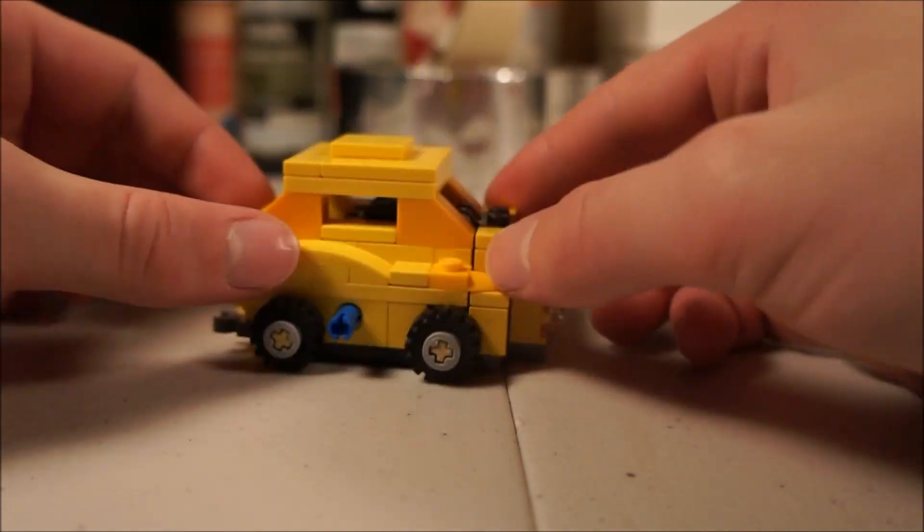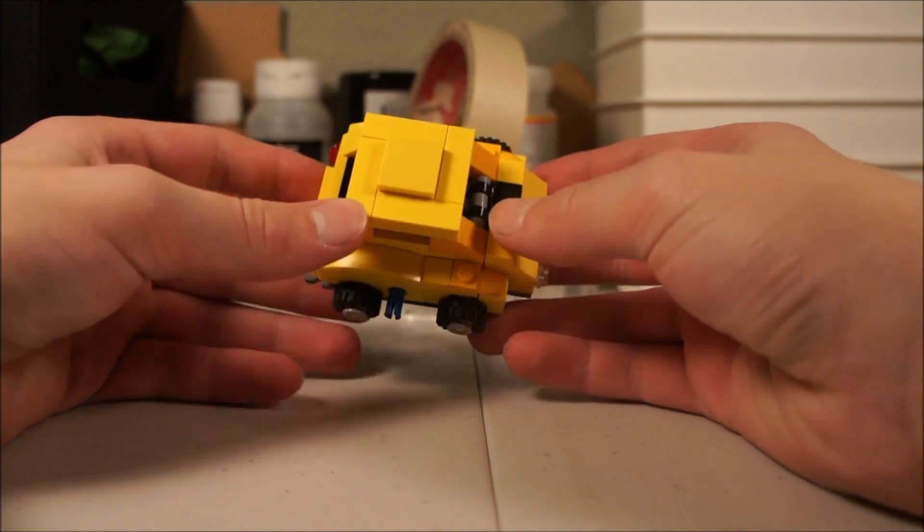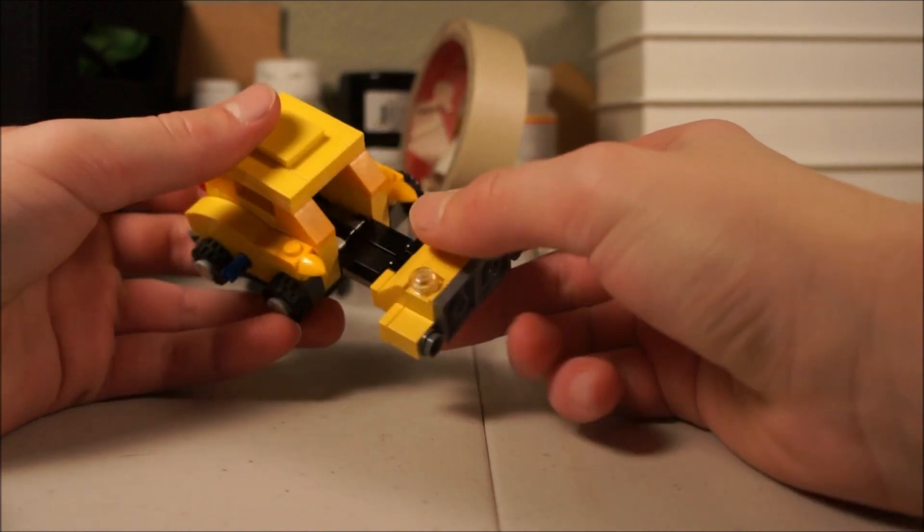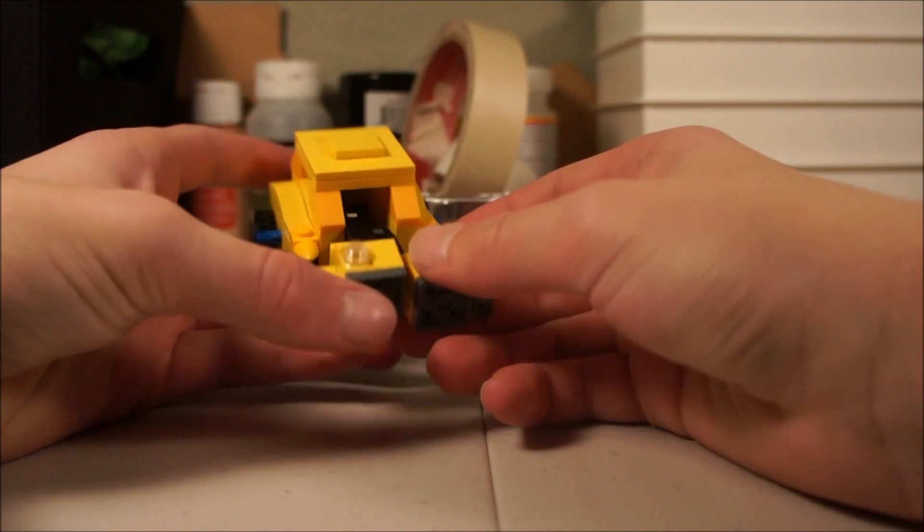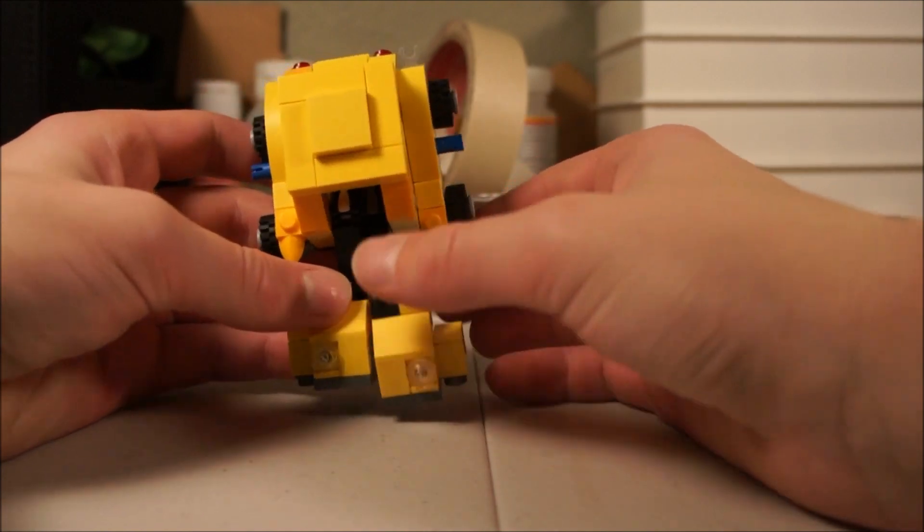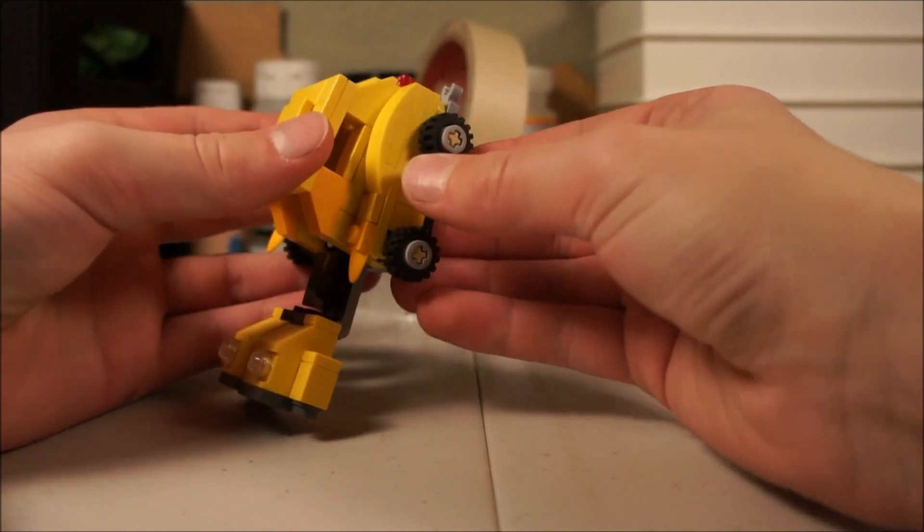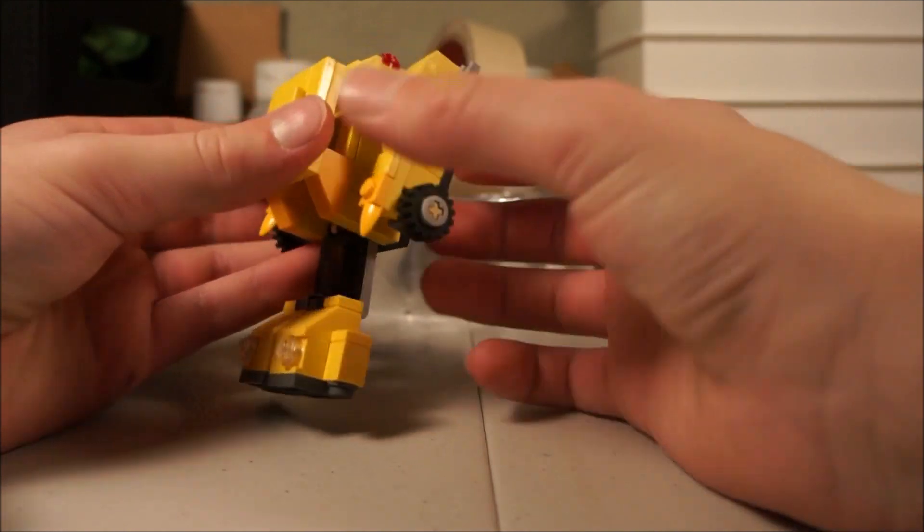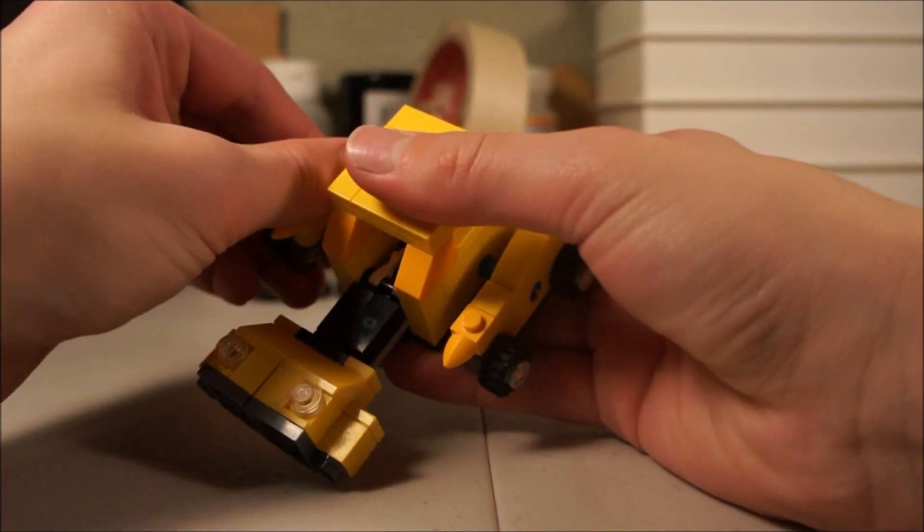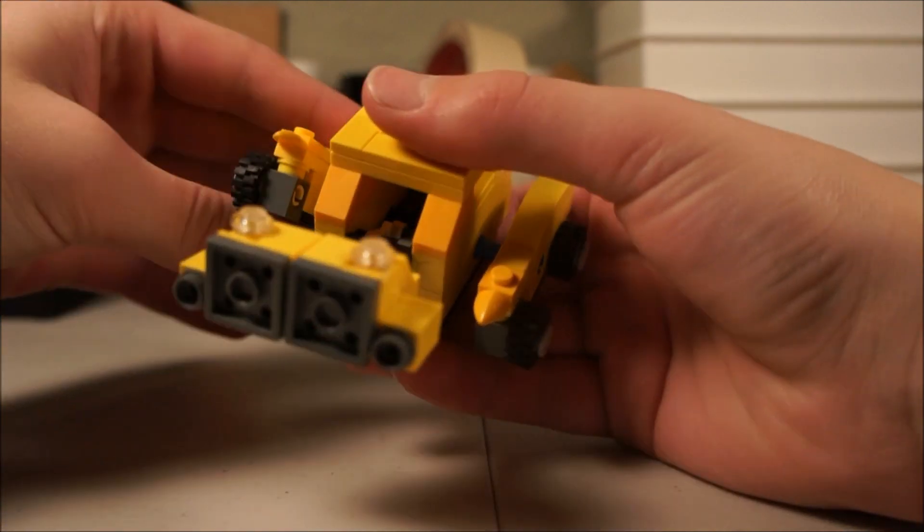Now on to transformation. To transform Bumblebee, what you first need to do is just pull the legs out, and then pop the feet apart. There's a little stud in there that you just snap together. Pull them out, pop the feet apart, and then just pop the arms off and flip them around.